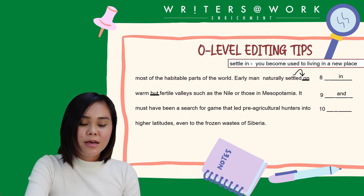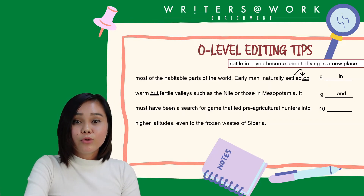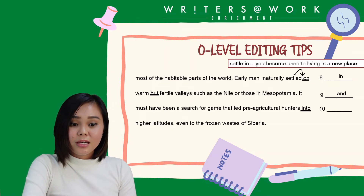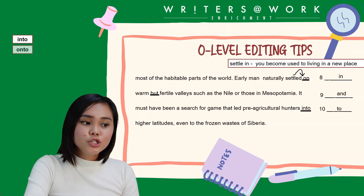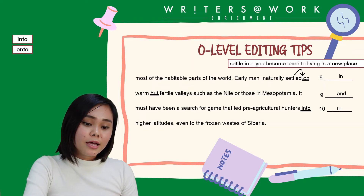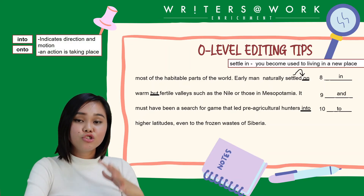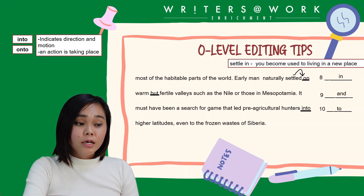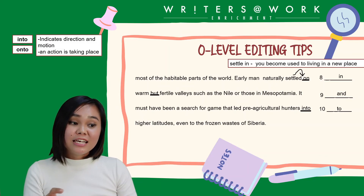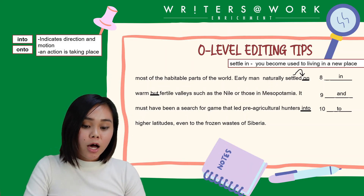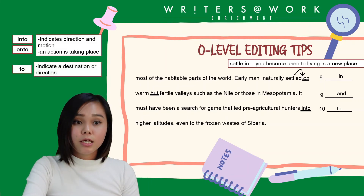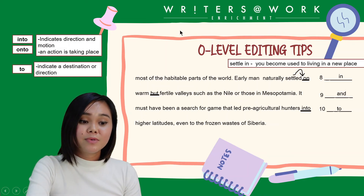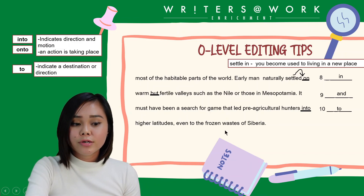It must have been a search for game that led pre-agricultural hunters into higher latitudes, even to the frozen wastes of Siberia. When you read this the first time you may think there's no error, but there is — 'into' should be 'to'. When do you use 'into' versus 'to'? 'Into' and 'onto' both indicate direction and motion — there's an action taking place, like 'I'm putting it into the basket' or 'the child leapt onto his horse'. But when you use 'to', you're talking about destination and direction without that action. So it should be: led pre-agricultural hunters to higher latitudes.